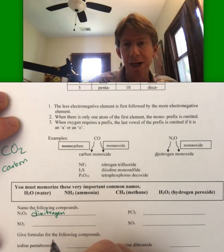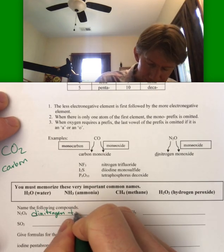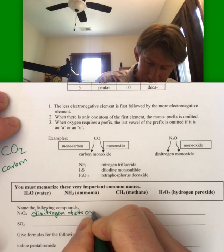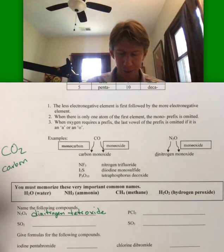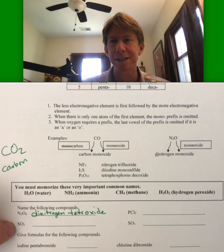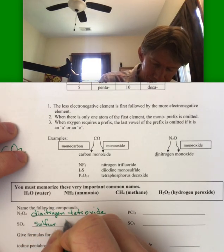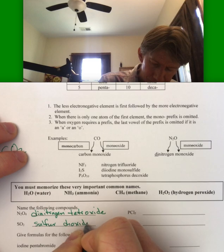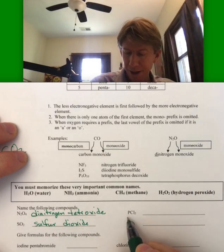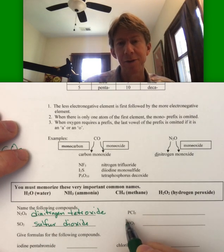Tetroxide, tetraoxide, but you take out the A, tetroxide. We have sulfur dioxide here. No mono. Again, we have one of the first elements.